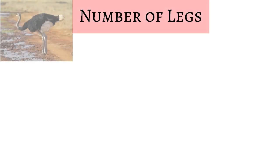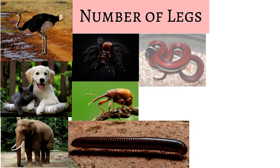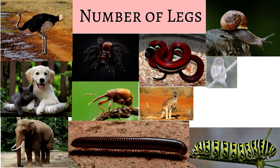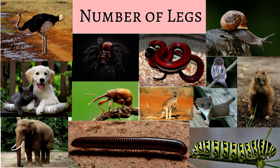We can group animals based on the number of their legs. Some animals have two legs, some have four legs, and some have six legs. There are some animals with multiple legs, and there are also some animals without any legs.